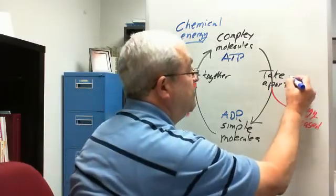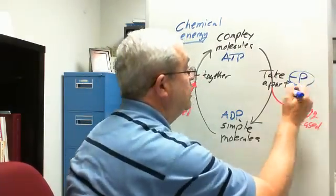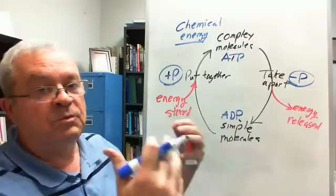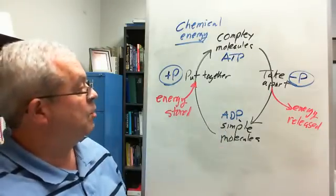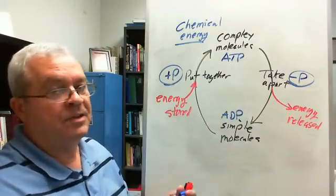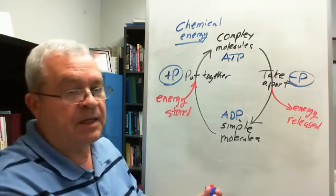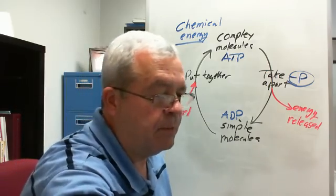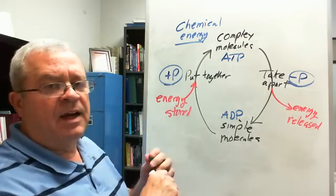And then ATP somehow gets to another place in the cell where that energy is needed. And what happens? That phosphate is removed. It's taken off, breaking that bond, releasing that energy, and forming ADP. And so this cycle goes on, goes on faster if you're playing basketball or something, happens at a more rapid rate.